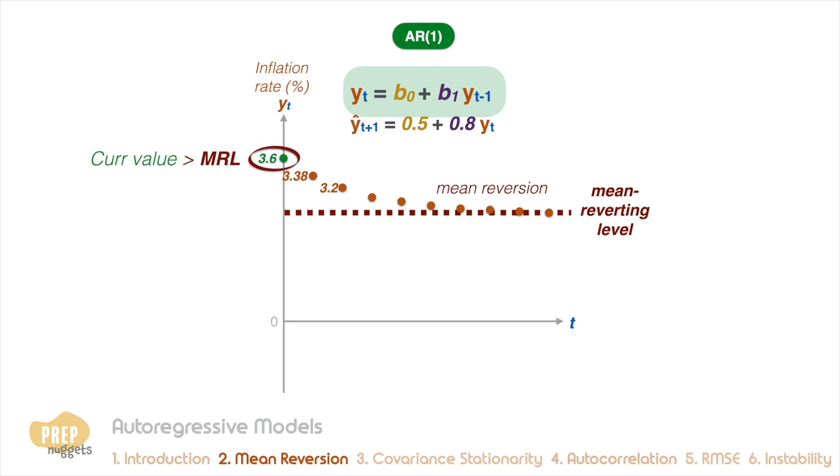When the current value is above the mean reverting level, the forecast for future periods will be lower than the current. Conversely, when the current value is below the mean reverting level, the forecast for future periods will be higher.